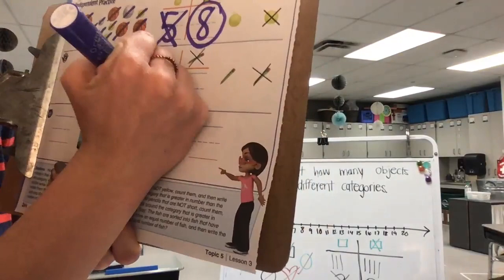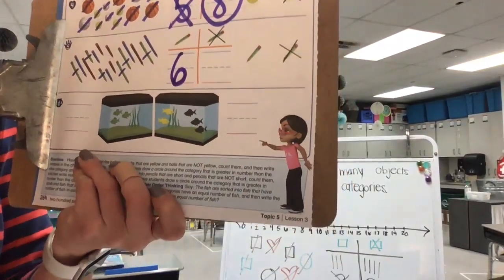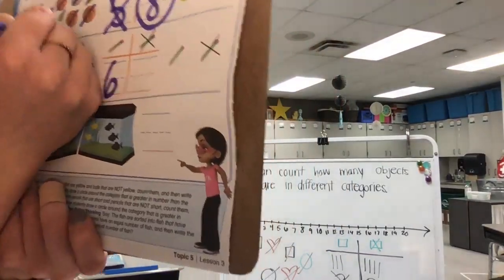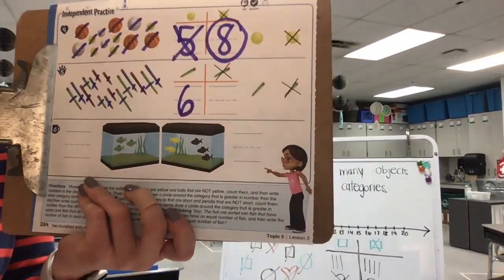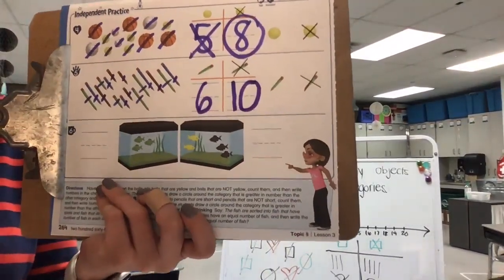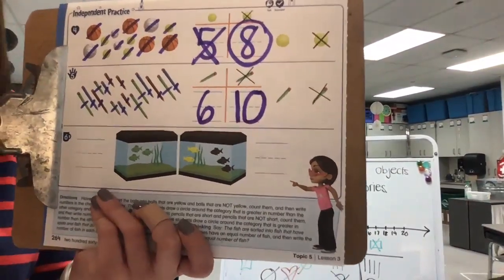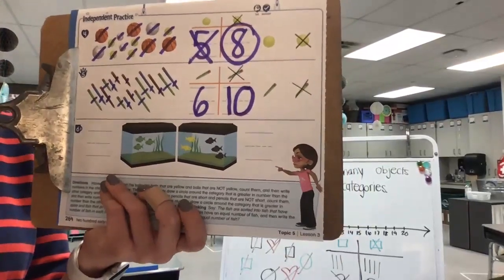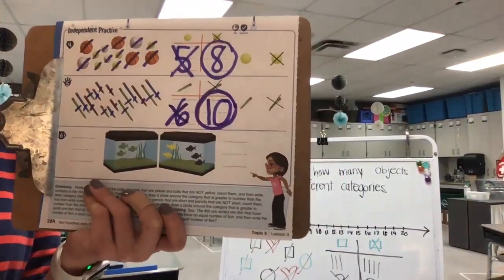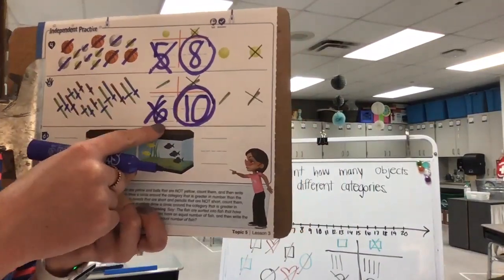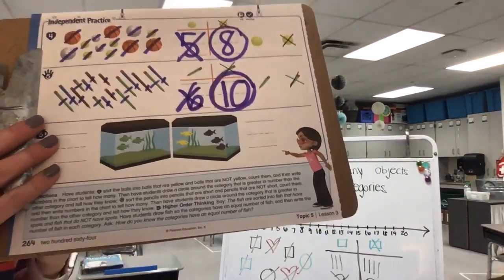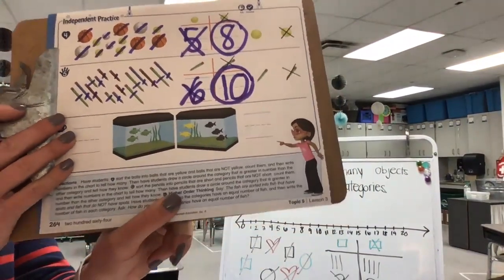Let's write six underneath our green pencil on our T chart. Now let's count and mark out the pencils that are not green. One, two, three, four, five, six, seven, eight, nine, ten. A lot of pencils are not green — ten! So we're going to write ten on the T chart on the side that has the X. Now compare the two. Circle the number that's greater — ten. X the number that's less — six. We know six is less than ten and ten is greater than six. The green pencils have a lesser amount than the pencils that are not green.